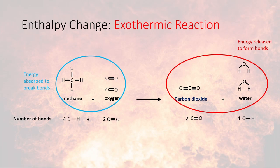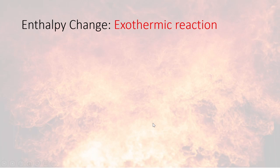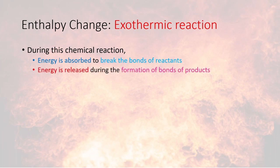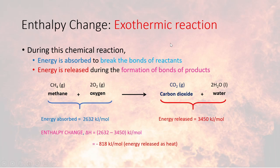Using bond energies, we can calculate how much energy is absorbed to break the bonds during the combustion of methane, and how much energy is released during the formation of bonds in carbon dioxide and water. These two values are not exactly the same — there is more energy released than there is energy absorbed. The difference between the energy absorbed and the energy released is known as the enthalpy change — roughly about 800 kilojoules per mole in this case. This is the amount of energy that is transferred.